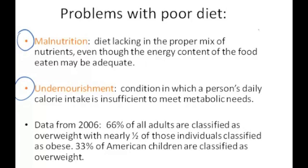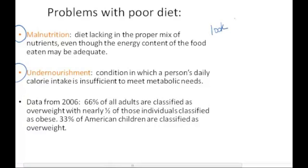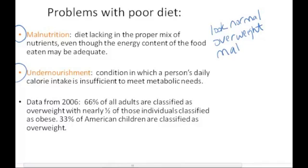What this means is a person might look normal — they don't look like they're starving. They might look normal, or could even be overweight or of normal weight, but that person may still be considered malnourished because the diet is not providing all the necessary nutrients to keep the organism healthy. This can lead to all kinds of health issues. That's the term malnutrition — it's improper nutrition.